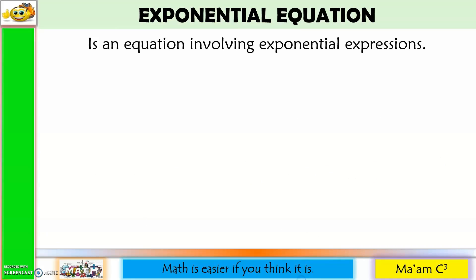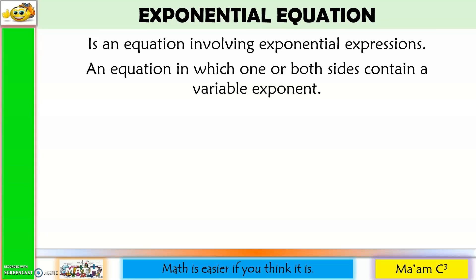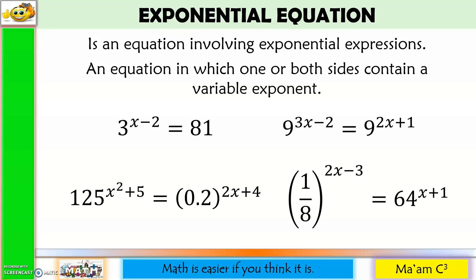Next, let's have exponential equation. It is an equation involving exponential expressions — an equation in which one or both sides contain a variable exponent. Here are some examples. Two things to remember: first, make sure that one or both sides are exponential expressions, so the base should be constant and the exponent should contain a variable x. For the first example, only one side is an exponential expression and the other side is a constant. For the remaining three examples, both sides are exponential expressions. Second, there should be an equal sign. That's it for exponential equations.